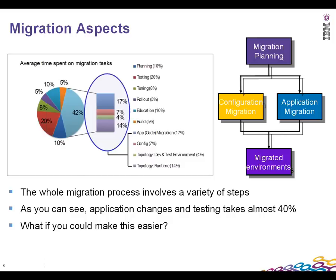After migration planning, we do configuration migration, then application migration — these two can happen in parallel, which is why you see the two parallel boxes in the chart. What we get at the end is a migration environment that is production-ready. On the left-hand side I've given a pie chart comparing the steps involved in migration: planning, testing, tuning, and so on.